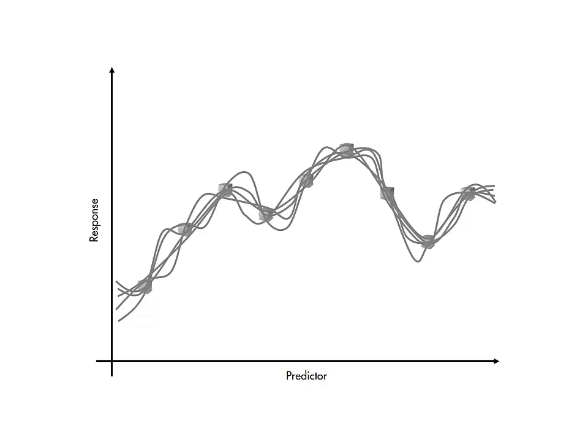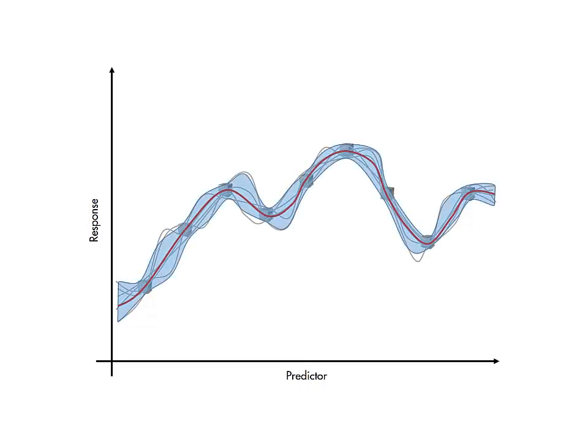Considering the whole fitted distribution of functions, we can determine the mean as well as a confidence interval. This gives us not only our regression function, but probabilistic bounds on the prediction.